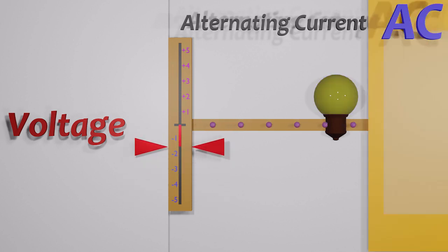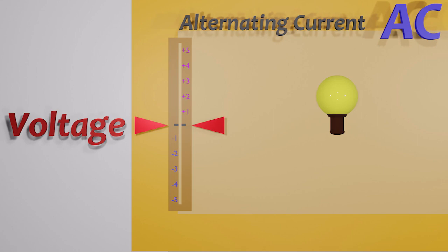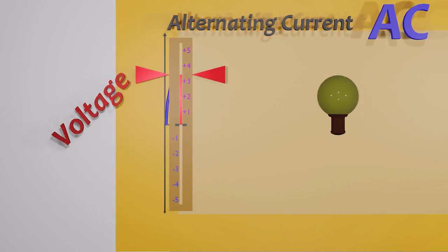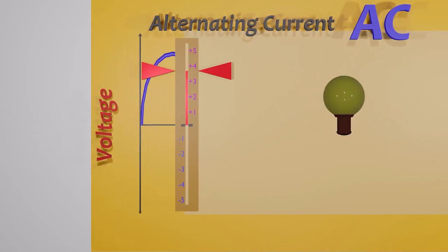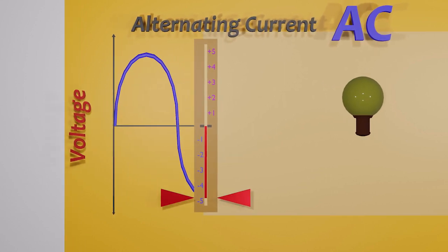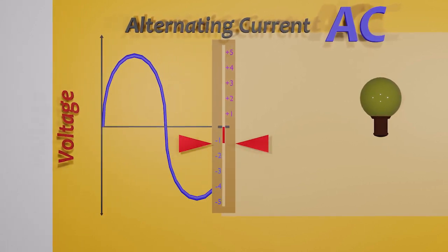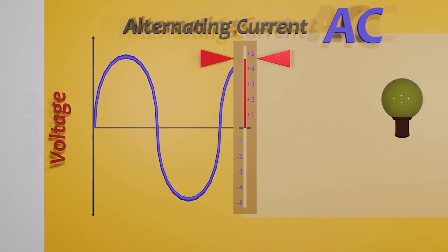Let's draw a voltage time graph for the one end of the conductor. Voltage goes up and then comes to zero. And goes down. And again becomes zero. This cycle repeats again and again.